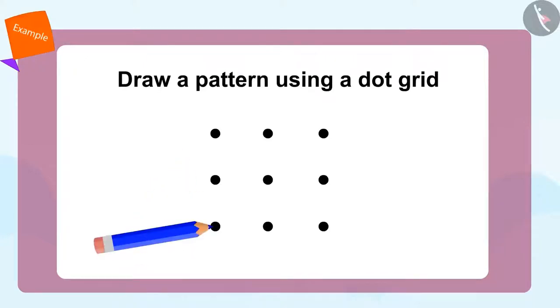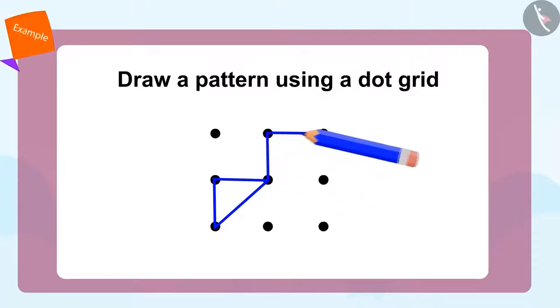First, we will join these two dots and create a vertical line like this. Now we will draw a horizontal line from this dot. Then we will join these two dots to make a slanting line. Then we will repeat the same method for another triangle. And that's how we make our pattern using the dot grid.